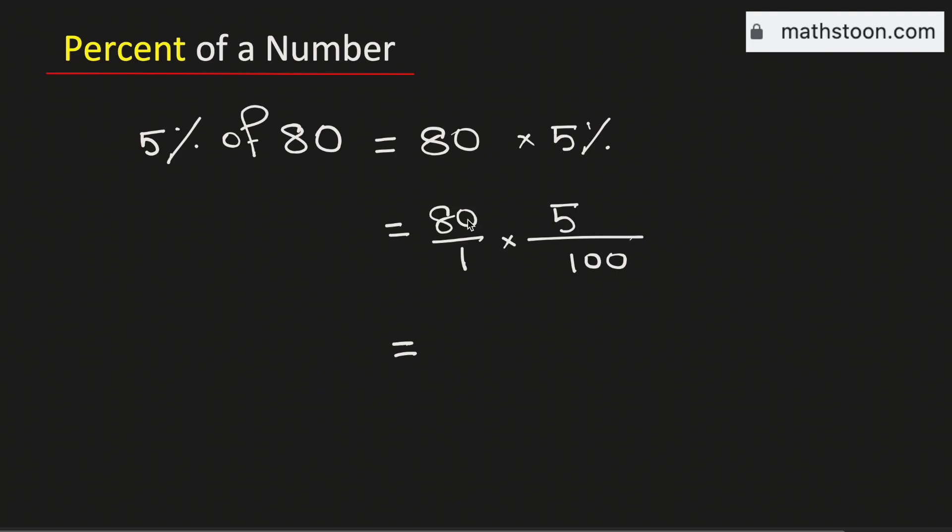Now if we multiply the numerators 80 and 5, we get 400. In the denominator, we have 1 times 100, which equals 100.